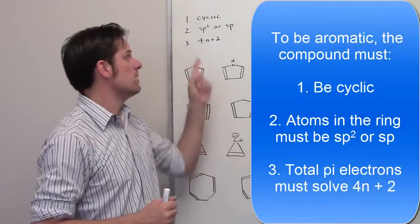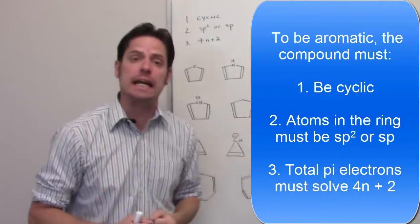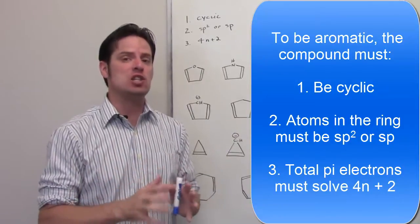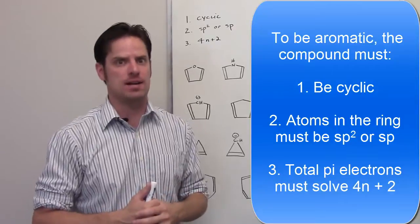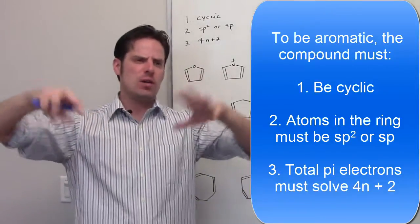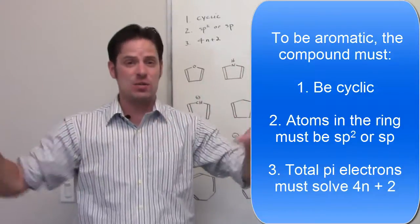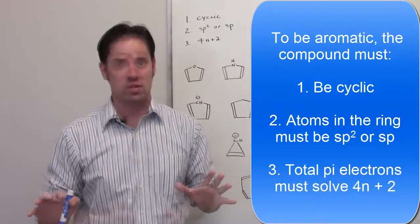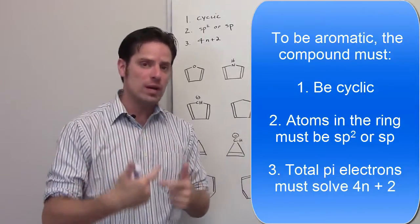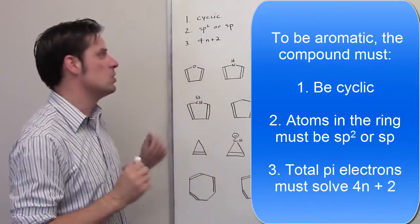Number one, it must be cyclic — that is, it has to be some kind of ring. Number two, all of the atoms in the ring must be either sp2 or sp hybridized — no sp3s. Now, if there are other appendages or substituents dangling off of the ring, atoms outside of the ring, we don't care about those. And three, the total number of pi electrons in the ring must equal 4n + 2. That is called Hückel's rule.